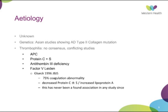The etiology is largely unknown. Genetics plays a significant role — there's some evidence to support a type 2 collagen mutation in the Asian population with Perthes. There are large varying studies regarding thrombophilia with no consensus and significant conflict in the literature. There is a study by Glick in 1996 which showed that 75% of children with Perthes had a coagulation abnormality, predominantly reduced protein C and S, but this has never been replicated.